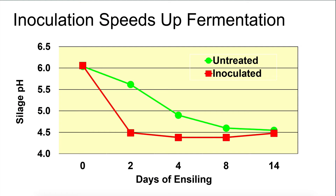This shows what is supposed to happen with a good inoculant. The green line is the control — untreated silage — and the red squares are the treated or inoculated silage. The bacteria enhance the fermentation profile, so you get down to a lower pH quicker. That means less heating, less dry matter losses, and improved digestibility because more digestible nutrients are retained. That is what you're trying to achieve when you put an inoculant in your silages.